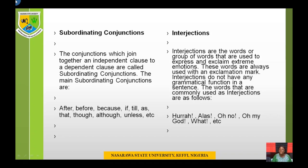Interjections are words or groups of words used to express extreme emotions. These words are always used with an exclamation mark. Interjections do not have any grammatical function in a sentence. Commonly used interjections include: hooray, at last, oh no, oh my god, what! Because of the emotion, you express yourself — it comes with excitement most times and also with an expression of shock.